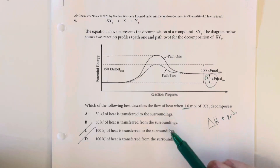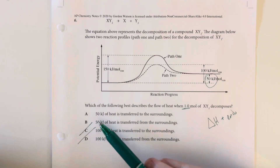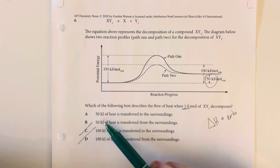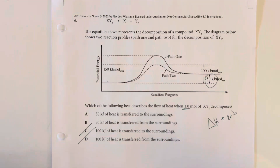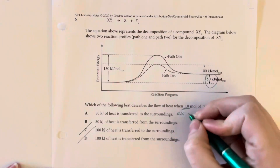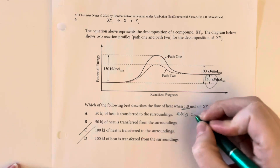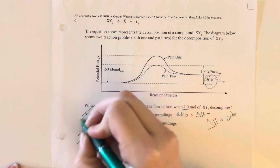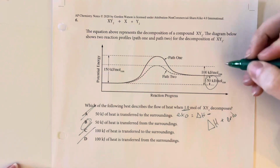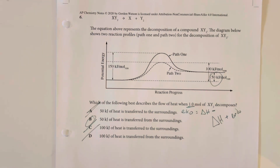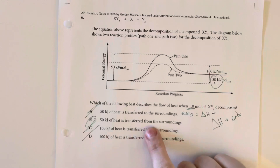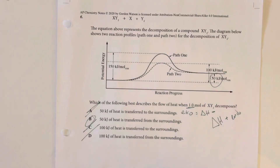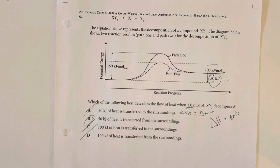Looking at option A and B — option A says 50 kilojoules of heat is transferred to the surroundings, which states this is exothermic with a negative delta H. We know it is endothermic because we have a higher energy state than we started with. Therefore, the energy is transferred from the surroundings to the sample of X and Y when we decompose.